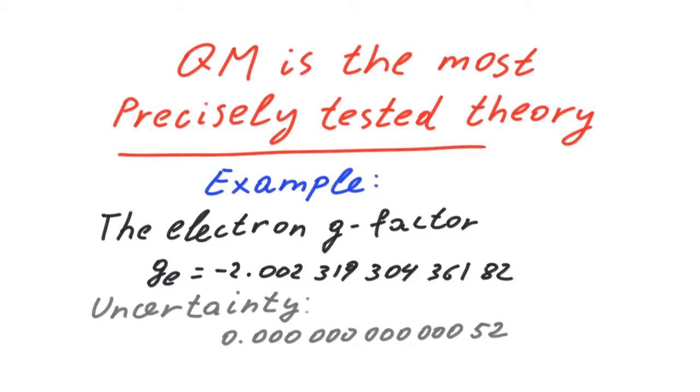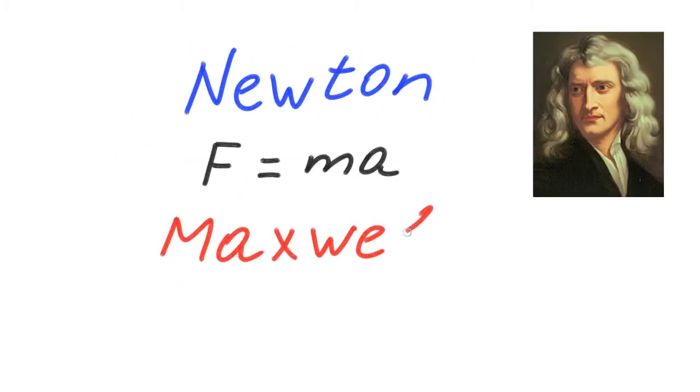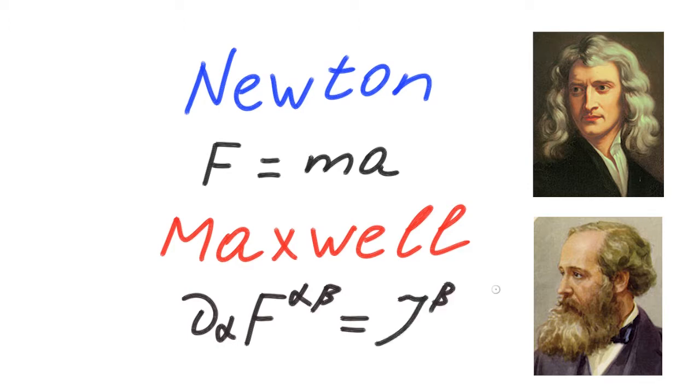But what made scientists look for a new theory at the beginning of the 20th century? Almost all observed phenomena could be explained with Newtonian mechanics and Maxwell classical electrodynamics. But unlike today, there were a few contradictions between the predictions of classical theories and actual observations.